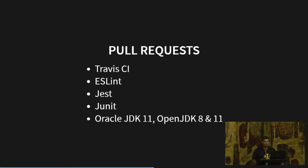We had Travis CI compile the server parts already for a while, but we've added Travis for the front-end as well. We are using ESLint to check the syntax of the code, so files look similar — no inconsistency between tabs and spaces and problems like that. Travis runs ESLint and Jest. For the server part, we use JUnit, and we're compiling the server with OpenJDK 8, OpenJDK 11, and Oracle 11.